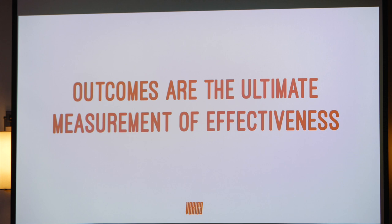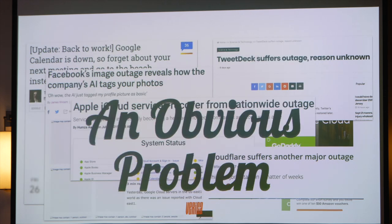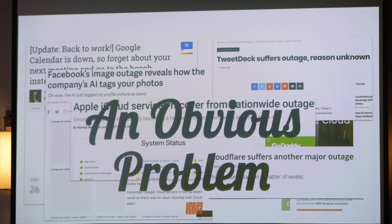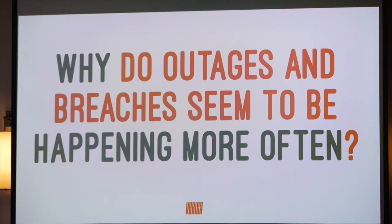Outcomes are essentially the ultimate measure of effectiveness, but these outcomes don't seem to be getting any better. Breaches and outages keep happening — and outages can be just as bad as breaches from a cost perspective. A lot of times, outages happen more frequently than breaches and they're just as expensive. One minute of downtime at United Health Group during open enrollment was over a million dollars.